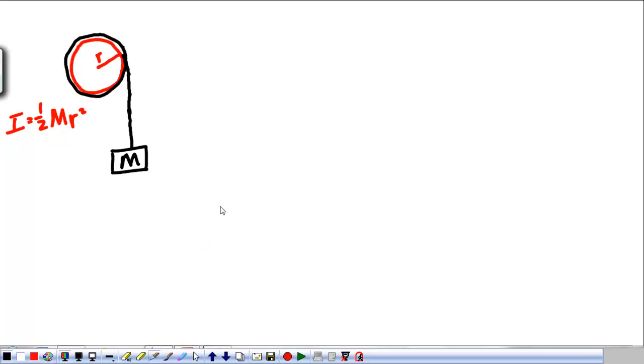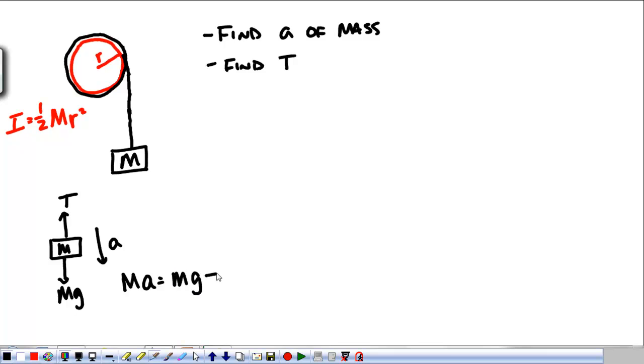Now, what we want to do is find the acceleration of the mass and find the tension. So, in order to find the acceleration of the mass, we need to look at a free body diagram of each object. First, when we have the mass of M, it has the tension in the string pulling up and weight pulling down. And it's going to accelerate down. So right off the bat, we can say that MA is equal to MG minus the tension.